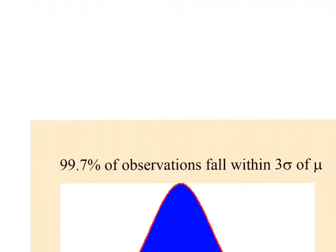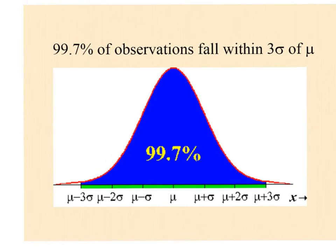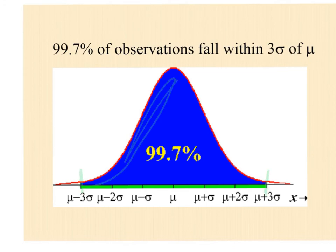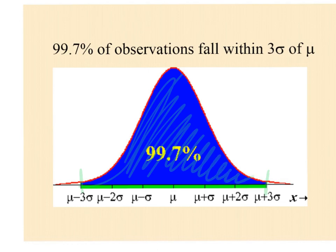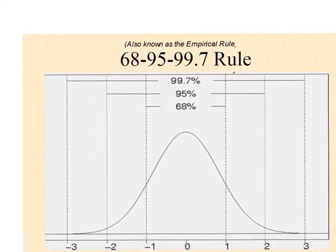The other number you must memorize: 99.7% of all observations fall within three standard deviations. A mathematician integrated from three standard deviations below to three standard deviations above — all that area in the middle is 99.7%. If you are more than three standard deviations away, you are insanely rare. This is called the 68-95-99.7 rule — also known as the empirical rule in some college classes.